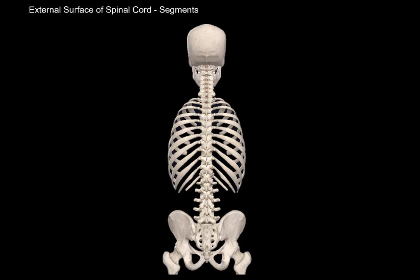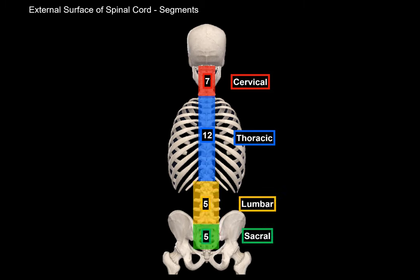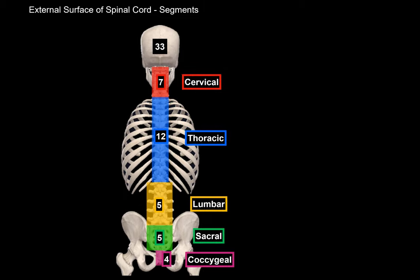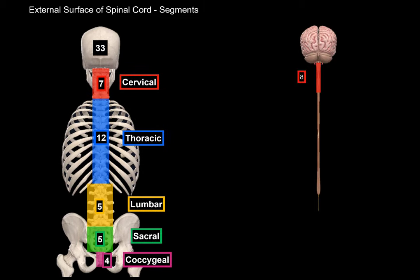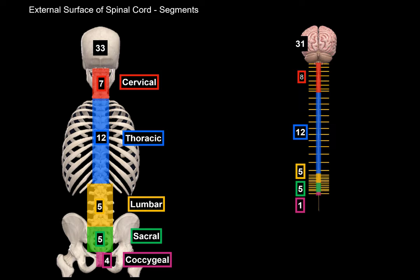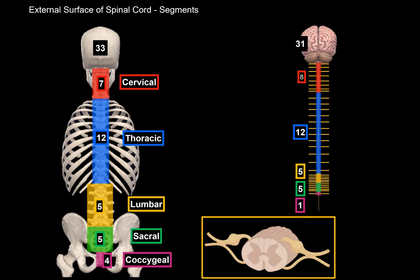Now let's talk about segments. The vertebral column consists of 7 cervical vertebrae, 12 thoracic, 5 lumbar, 5 sacral, and usually 4 coccygeal bones fused together, adding a total of 33 vertebrae. The spinal cord, however, is divided into 8 cervical segments — not 7 — but still 12 thoracic, 5 lumbar, 5 sacral, and only 1 coccygeal segment, adding up to 31 spinal cord segments. The reason the cord is divided into segments is that at each segment, one spinal nerve emerges from either side.